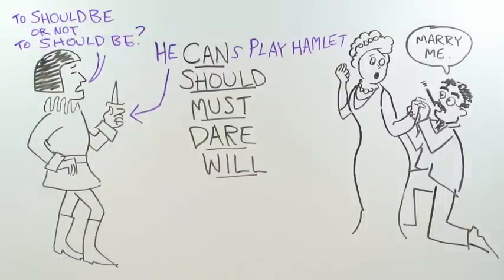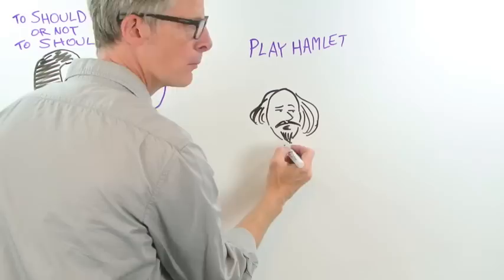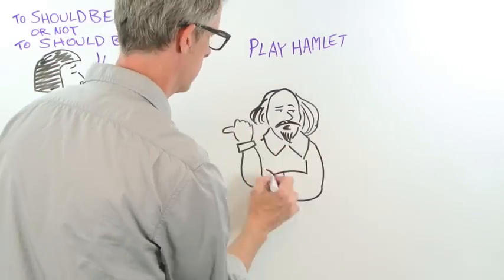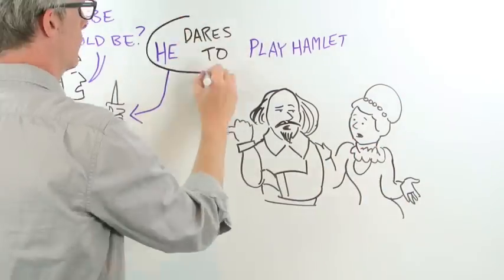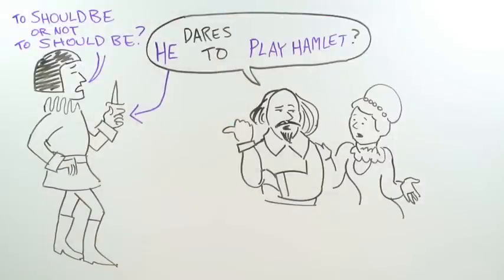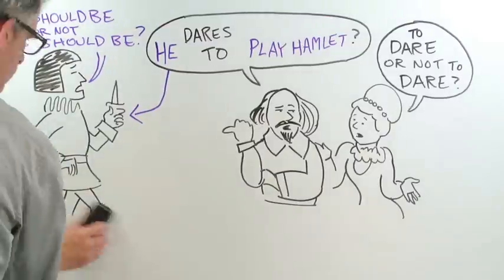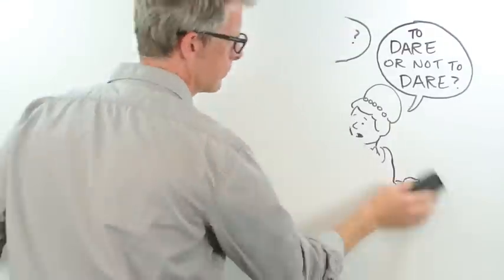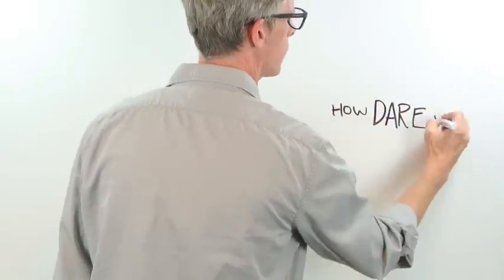Dare drifted away from this group in the 16th century and became more like other verbs. It became used as a main verb with all the forms. But it still has a foot in the modal group, trying to have it both ways, making it act a little weird sometimes. We say 'how dare you' for the same reason we say 'how will you' and 'how can you.'